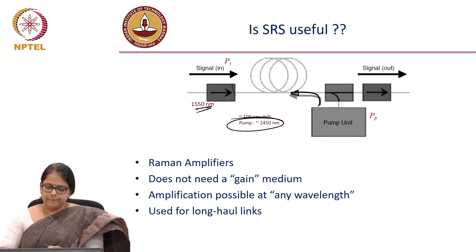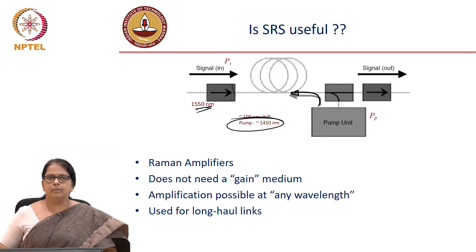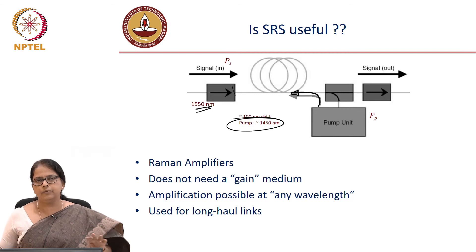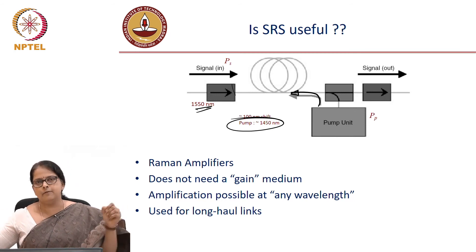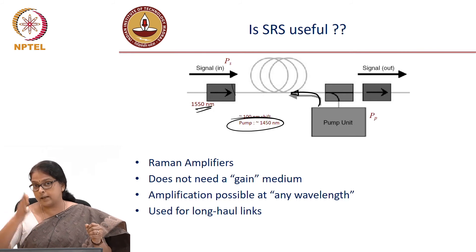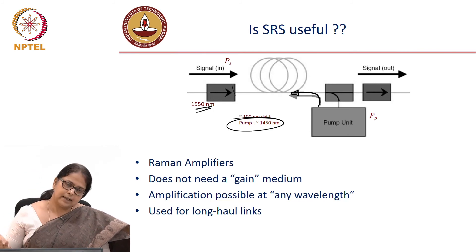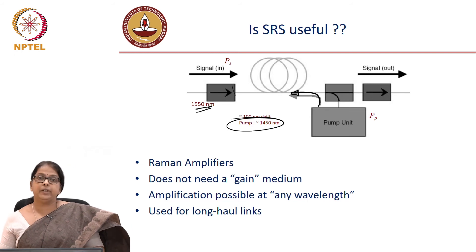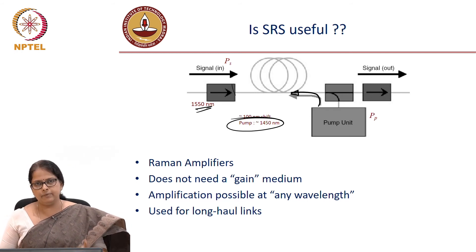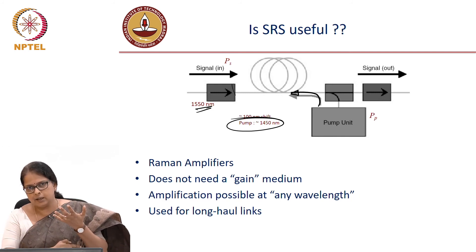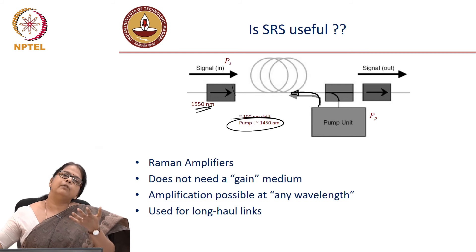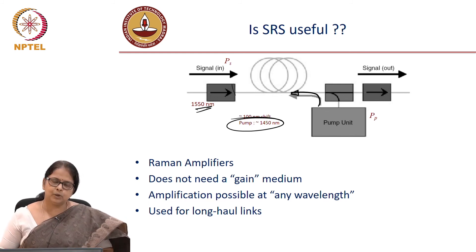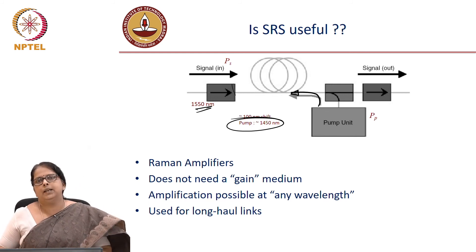Raman amplifiers are considered very good for two reasons. First, the transmission fiber itself can work as an amplifier, so you do not need a separate amplifier box. Second, you can generate amplification at any wavelength: if you want to amplify 1300 nm, you pump at 1200 nm; if you want to amplify 1500 nm, you pump at 1400 nm. It is very versatile in that sense.